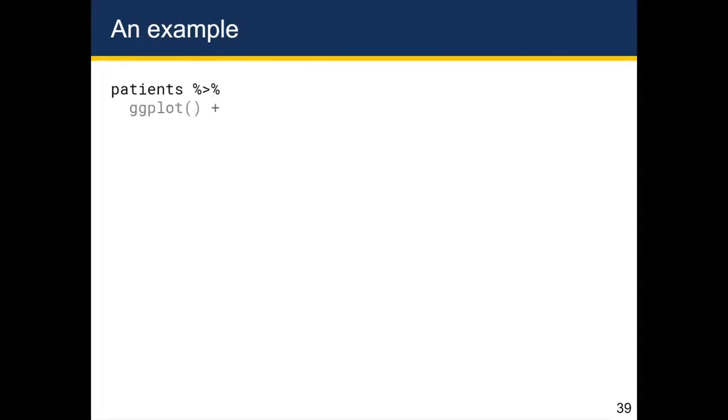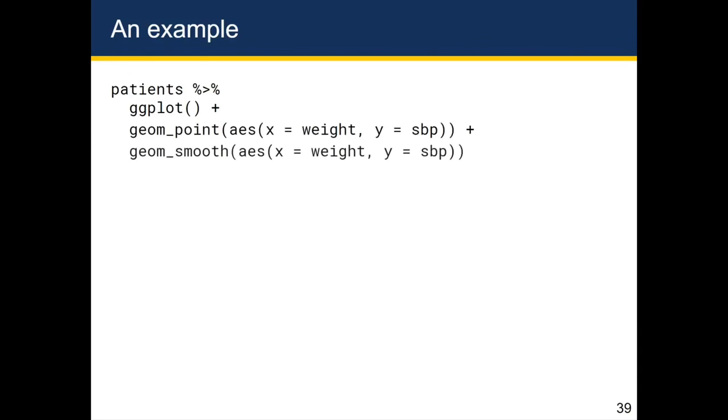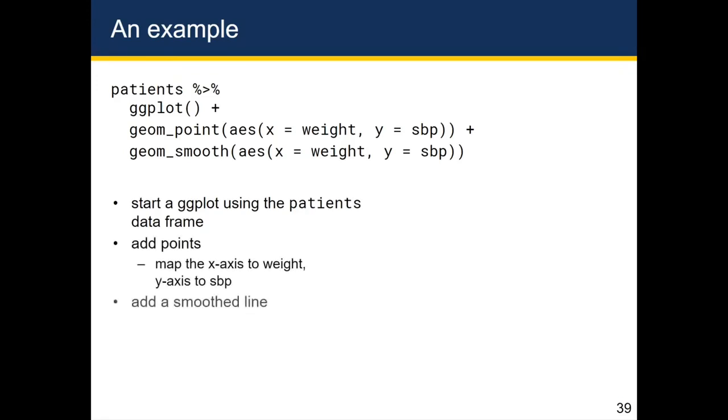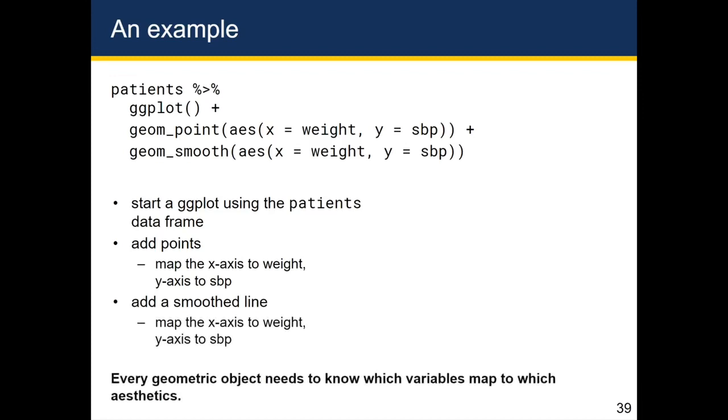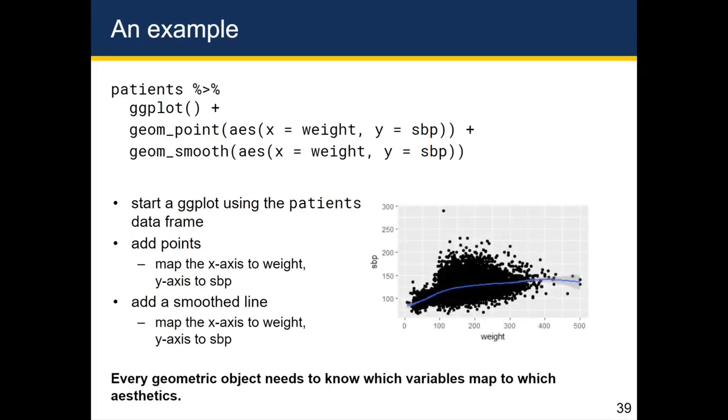Another example is where we start with patients, we add ggplot, or we pipe it to ggplot, we add points, we add a smooth line, and now we want to take a look at which plot we're going to get. Notice that inside of geom_point and inside of geom_smooth, which is a way to get a smooth line, I had to specify a mapping. Because any geometric object won't work or won't know what to do unless it knows what the mapping is for the aesthetics to your variables. So the way I would read this is start with the ggplot using the patient data frame, add points, map the variables, add a smooth line, map the variables. And this point I already mentioned that every object needs to know which variables to map to which aesthetics. And I would get this plot on the right.